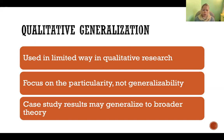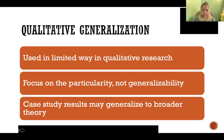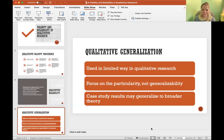For example, if I conduct a qualitative study at a school, I can't expect those results to be generalizable to similar students at a different school. It's possible the same results apply, but we can't know that without conducting the same study at that additional institution. Thank you so much for watching, and I'll see you for the next video.